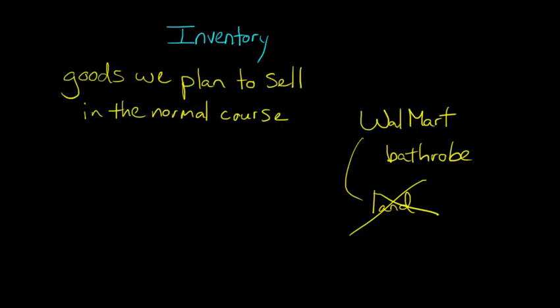Walmart is in the business of buying and selling bathrobes and soap and food and those types of things. So even though they might plan to sell this land, it's not inventory, because it's not the normal course. It's not their main bread and butter of their operations. So inventory is the main things that a business sells in order to continue doing business, their main operations.